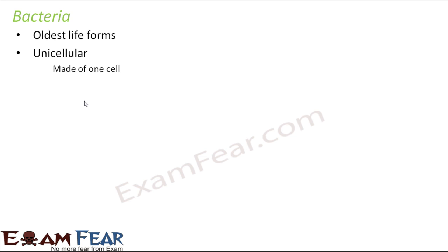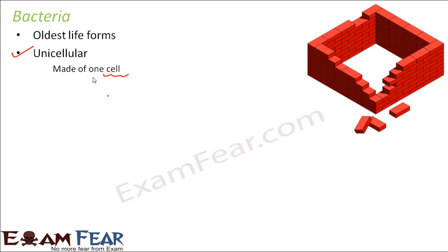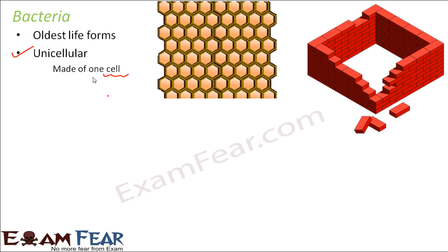Bacteria are unicellular — that is, they are made up of one cell. What do we mean by a cell? For example, when you want to build a house, you need bricks. A lot of bricks together help you construct a house of your choice — a two-story building, a single floor, or a huge tower. Bricks are the building blocks of construction. Similarly, inside every living organism there are basic building blocks called cells. Each building block is a cell, just like a brick.